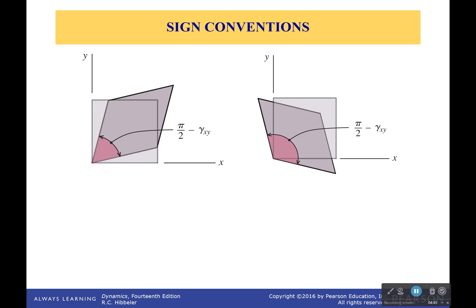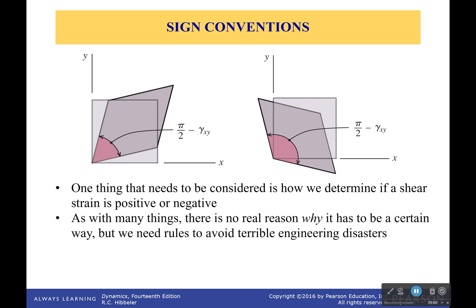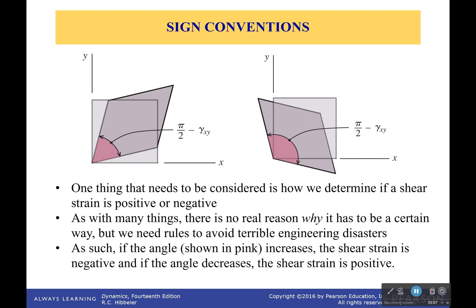Okay, now how about some sign conventions? You're like, oh, yes, I've been waiting for the sign conventions so much. Good for you. Okay. So how do we determine if a shear strain is positive or negative? Well, there's no real reason why it has to be one way or another. But you have to have rules in order to avoid terrible engineering disasters. So if the angle, which is shown in pink, increases, the shear strain is negative. And if the angle decreases, the shear strain is positive.